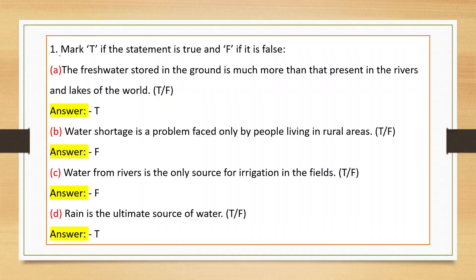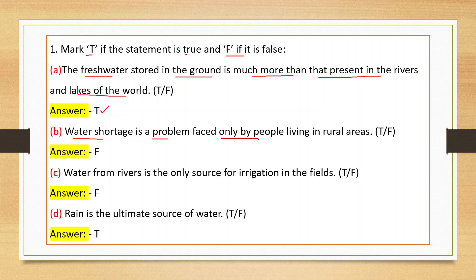Question number one: Mark T if the statement is true and F if it is false. First one: the fresh water stored in the ground is much more than that present in the rivers and lakes of the world. This is a true statement, so the answer is T.